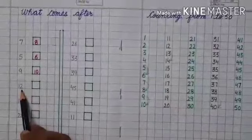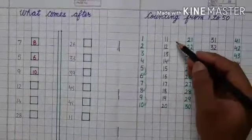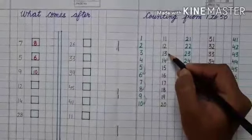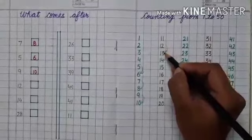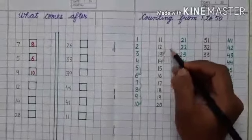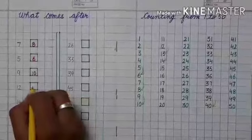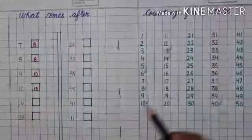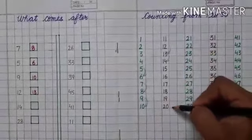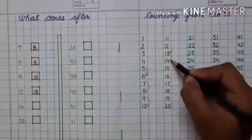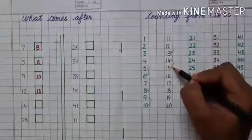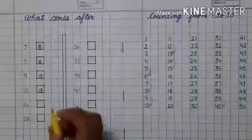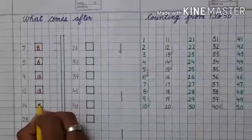Next number is twelve. See here students in the series of eleven to twenty. What comes after twelve? Thirteen — thirteen is the next number. Write thirteen in the box. Next number is fourteen. You have to see the series eleven to twenty. What comes after fourteen? Fifteen. Write fifteen in the box.